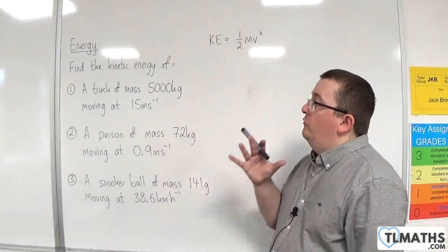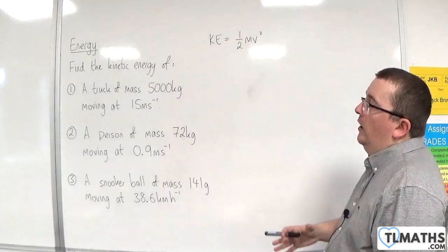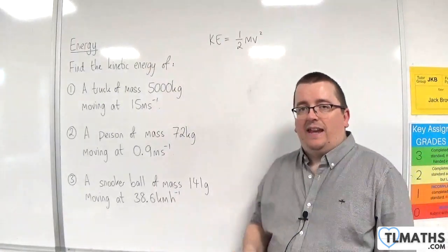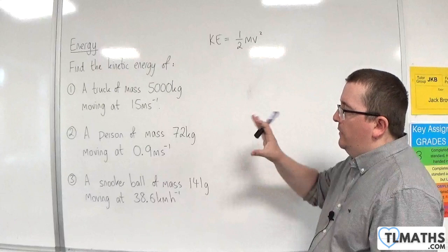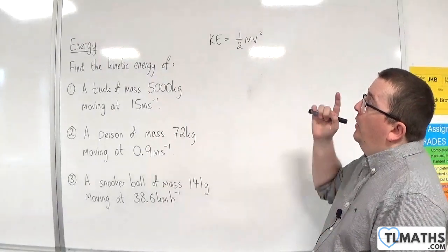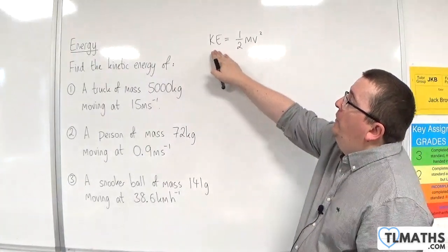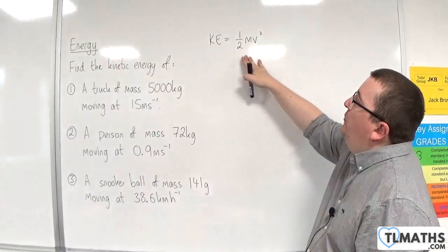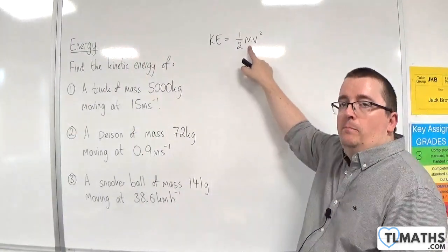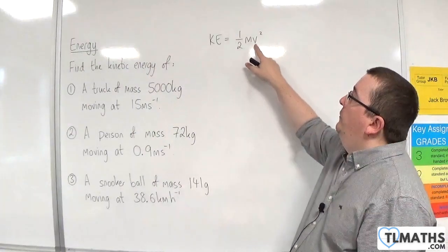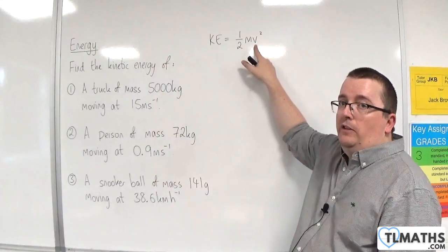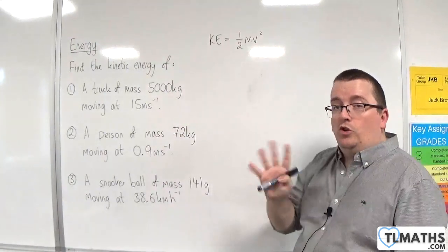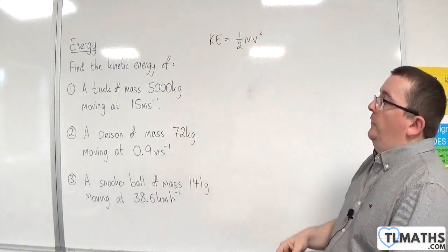In this video, I wanted to go through some basic examples of calculating the kinetic energy of an object in different scenarios. Remember, we need the formula for kinetic energy, which is one-half mv squared, where m is measured in kilos and v is measured in metres per second. You need to watch out for the units.